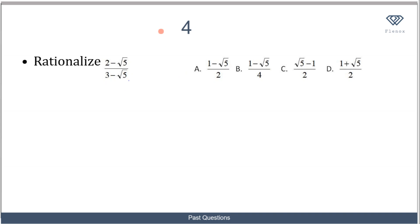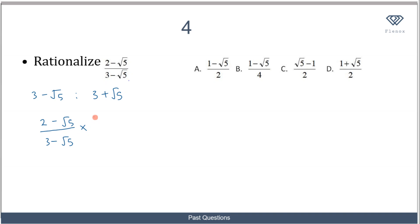Now let's solve this question about rationalizing a surd. To rationalize a binomial surd, we multiply the numerator and denominator by the conjugate of the denominator. The conjugate of 3 minus root 5 is 3 plus root 5. So we multiply numerator and denominator by 3 plus root 5, giving us (2 minus root 5)(3 plus root 5) over (3 minus root 5)(3 plus root 5). Expanding the numerator: 2 times 3 gives 6.